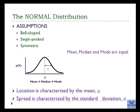Location is characterized by the mean, mu. Spread, or variability, is characterized by the standard deviation, sigma.